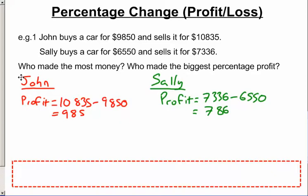But when we think about the percentage profit, well that is, what percentage is that on what he originally spent? So John originally spent $9,850 and on that he made $985. So this is using one of the other skills we've already looked at, $985 as a percentage of the original amount spent.